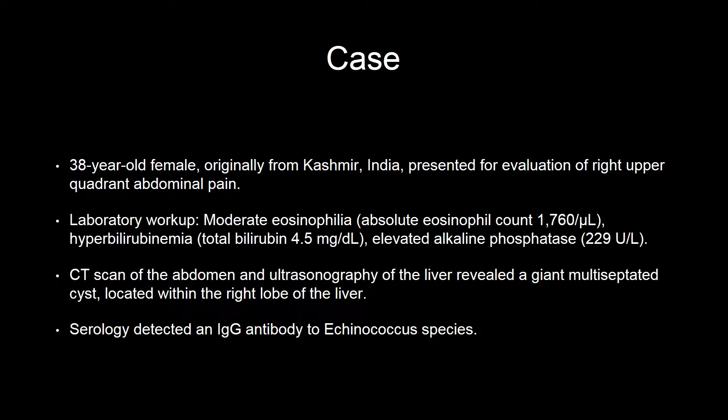A 38-year-old female, originally from Kashmir, India, presented for evaluation of right upper quadrant abdominal pain. Laboratory workup revealed moderate eosinophilia, hyperbilirubinemia, and elevated alkaline phosphatase. CT scan of the abdomen and ultrasonography of the liver revealed a giant, multiseptated cyst located within the right lobe of the liver. Serology detected an IgG antibody to echinococcus species.